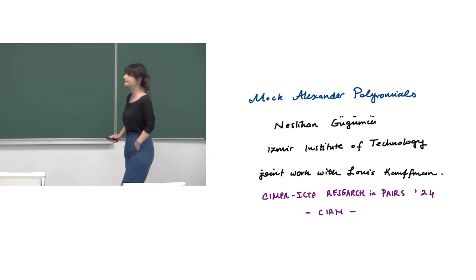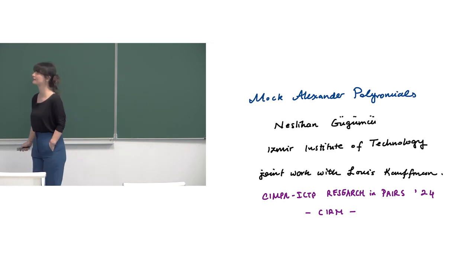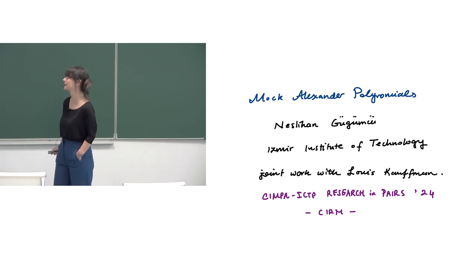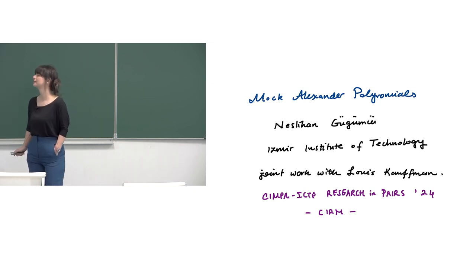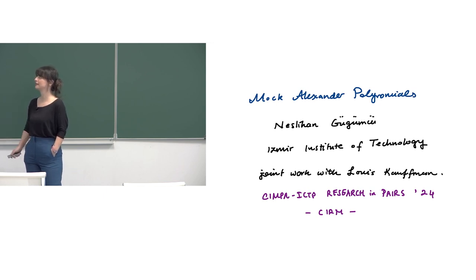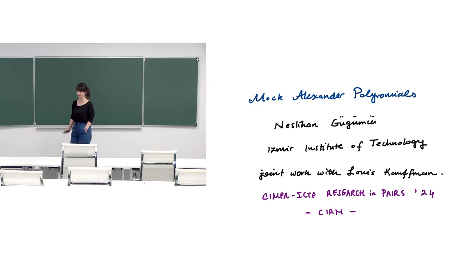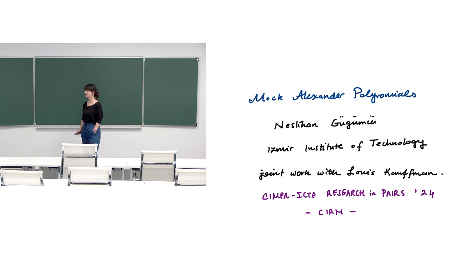The title is Mock-Alexander Polynomial. We have defined the Alexander polynomial with the original construction and also with the state sum description yesterday. Today I will show you that we can define Alexander polynomial-like polynomials for some variations of knots, such as virtual knots that are knots lying in thickened surfaces, or for knotoids that are open-ended knots lying in some surfaces.